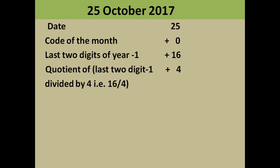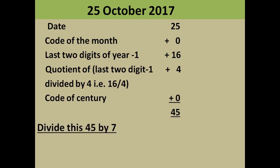Remember, you always ignore the decimal part and keep only the integer quotient. Next, add the code of the century — for 2000 the code is 0. Adding all numbers: 25 + 0 + 16 + 4 + 0 = 45. Now divide 45 by 7; the remainder is 3. When the remainder is 3, the day is Wednesday.